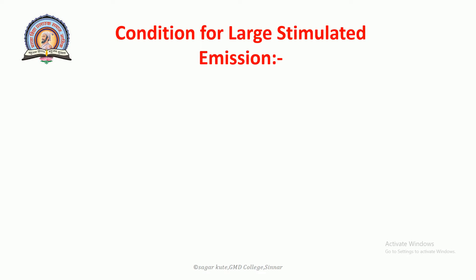Stimulated emission has to be induced or stimulated and is generated under the special conditions as stated by Einstein. When population inversion exists between upper and lower levels among the atomic system, it is possible to realize amplified stimulated emission, which has the same frequency as the incident radiation. The absorption and spontaneous emission always occur together with stimulated emission. As we know, the Einstein coefficient relation is A21 / B12 = 8πhν³/c³. This will be equation number 1.